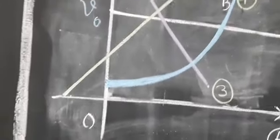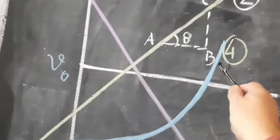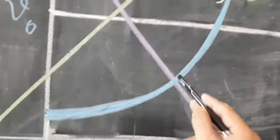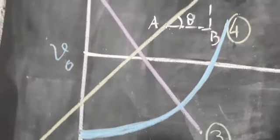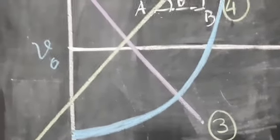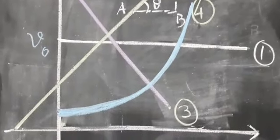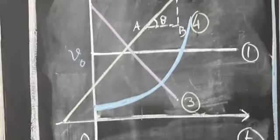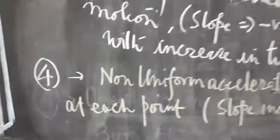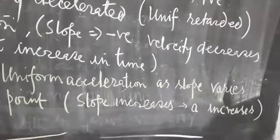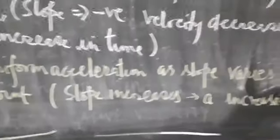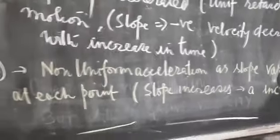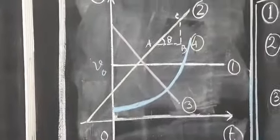Now come to the fourth graph — this blue graph. For graph four, if you find the slope, you get the value of tan theta, which is different at different points. If the slopes are different at different points, that means acceleration is not uniform. So the fourth graph indicates non-uniform accelerated motion. The slope varies at each point — slope increases, meaning acceleration is varying. So the fourth one is non-uniform accelerated motion.